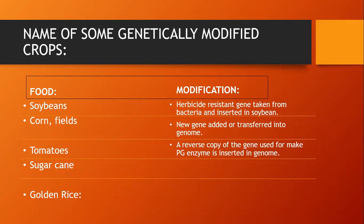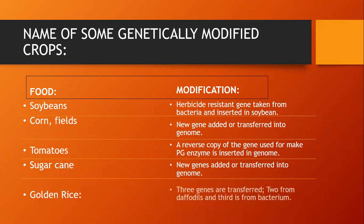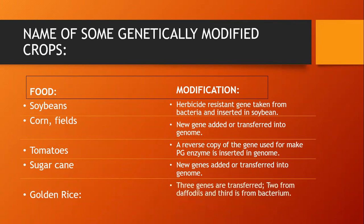Corn is produced by new genes added or transferred into the genome. The tomato is produced by inserting a reverse copy of the gene used for making a PG enzyme into the genome. Sugarcane is produced by new genes added or transferred into the genome. Golden rice is different from all of them because it includes three genes: two from the daffodil and a third from a bacterium.